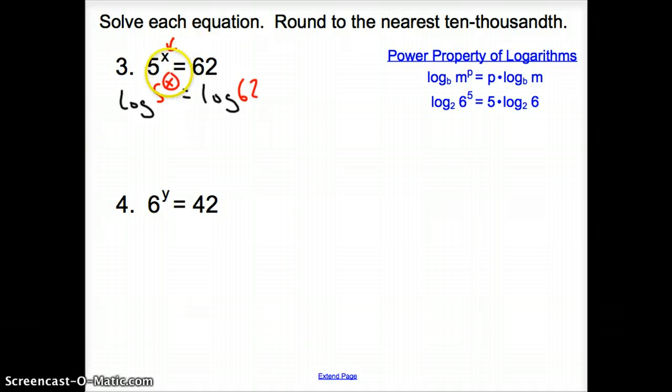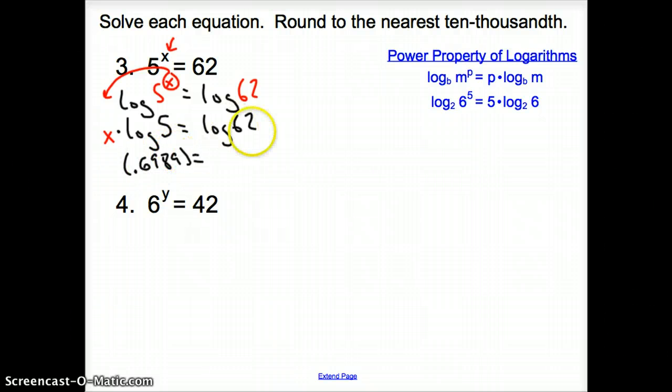When I take the log of it, the x goes out in front, so now it's x times log of 5 equals log of 62. Now we can punch this into our calculator. Log of 5 is 0.6989 equals log of 62 which is 1.7924.